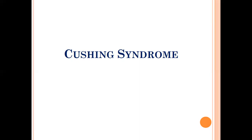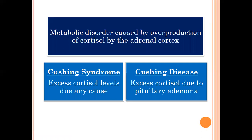Cushing syndrome is a metabolic disorder caused by excess production of cortisol by the adrenal cortex. We must differentiate between Cushing syndrome and Cushing disease: Cushing syndrome is excess cortisol levels due to any cause, while Cushing disease specifically refers to excess cortisol due to a pituitary adenoma. This distinction must be clear in your mind.